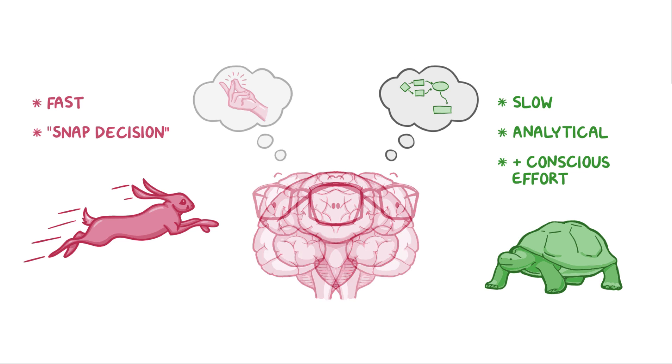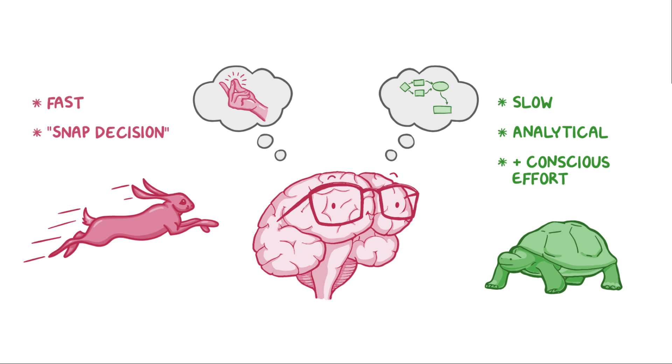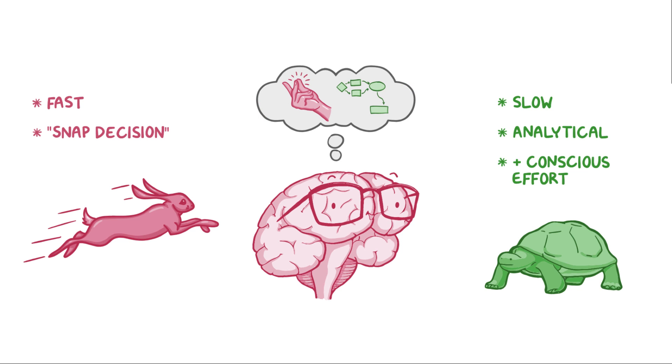We fluidly switch back and forth from System 1 to System 2, and while they're not actually two physically separate systems in the brain, they do represent a model that can help us better understand the different ways that the brain operates.